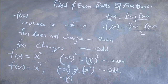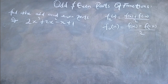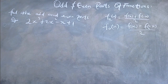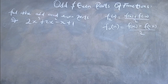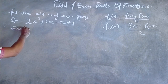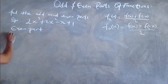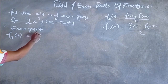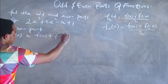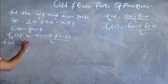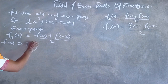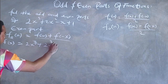Now let us see a specific problem where we will find the odd and even parts of a function. We have to find the odd and even parts of the function 2x raised to power 3 plus 2x squared minus x plus 1. To obtain the even part, f sub e of x equals f of x plus f of negative x, all divided by 2. The function f of x is 2x raised to power 3 plus 2x squared minus x plus 1.